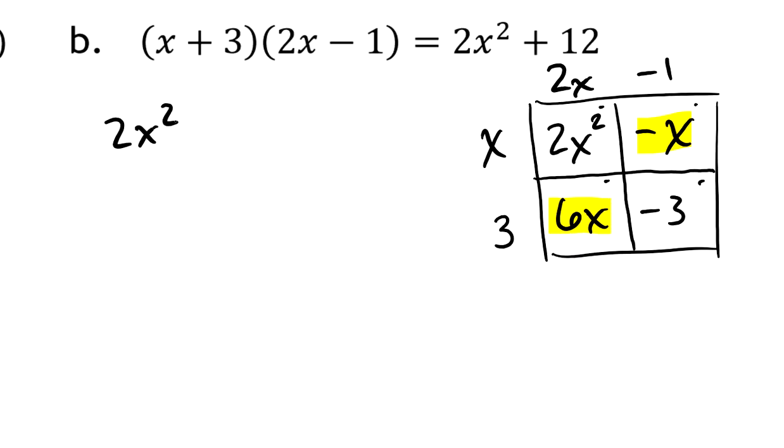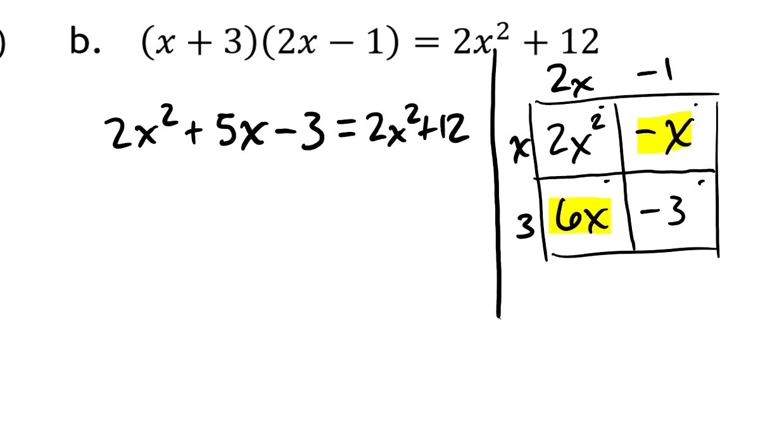Now, two of these are like terms. Negative 6 or positive 6X and negative X. They can be combined. So I'm going to rewrite the left-hand side as 2X squared. And I'm going to do plus 5X. That's 6X's minus 1X. And then finally minus 3. And over on the other side, I've got 2X squared plus 12.